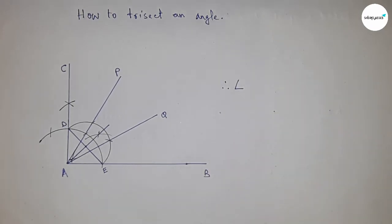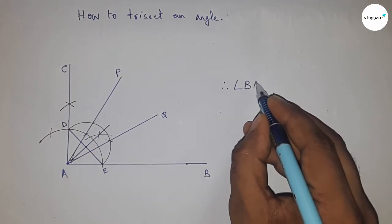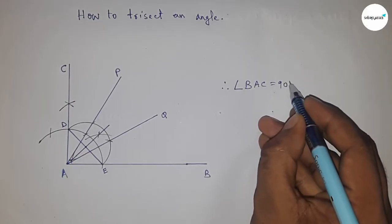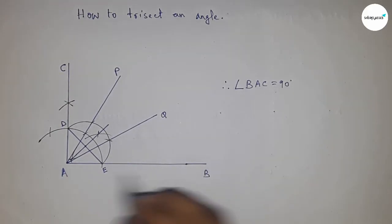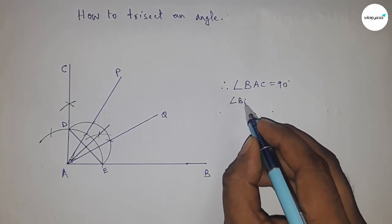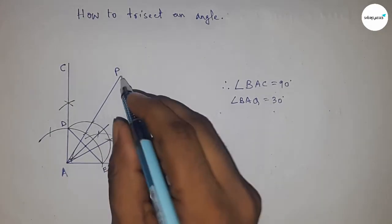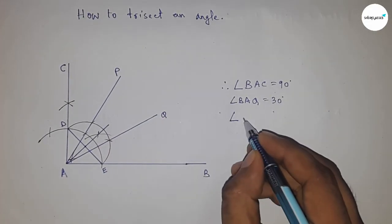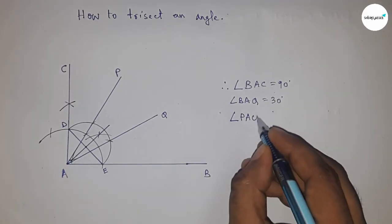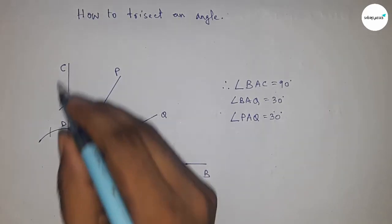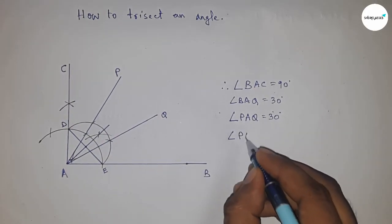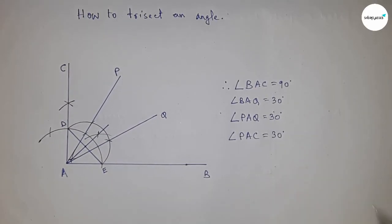If you trisect a 90-degree angle, all the angles are equal at 30 degrees each. Angle BAQ equals 30 degrees, angle BAQ also equals 30 degrees, and angle BAC equals 30 degrees. That's all — thanks for watching. Please subscribe, like, and comment on my video. If this video is helpful, please share with your friends.